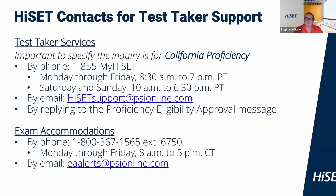MyHiSET contacts for test taker support. Test taker services will support California proficiency test takers, but it is very important to specify that the inquiry is for California proficiency. By phone, they can be reached at 1-855-MYHISET, available Monday through Friday 8:30 a.m. to 7 p.m. Pacific Time, and Saturday and Sunday from 10 a.m. to 6:30 p.m. Pacific Time. You can also email at hisetsupport@psionline.com, or if you are working through accommodations, you can reply to the proficiency eligibility approval message. For exam accommodations by phone: 1-800-367-1565, extension 6750, Monday through Friday 8 a.m. to 5 p.m. Central Time, and by email at eaalerts@psi.com.